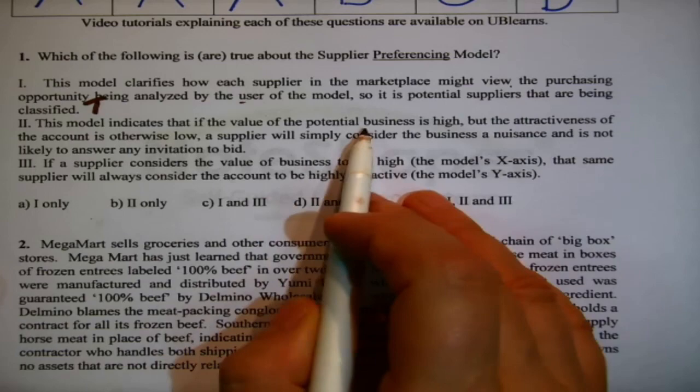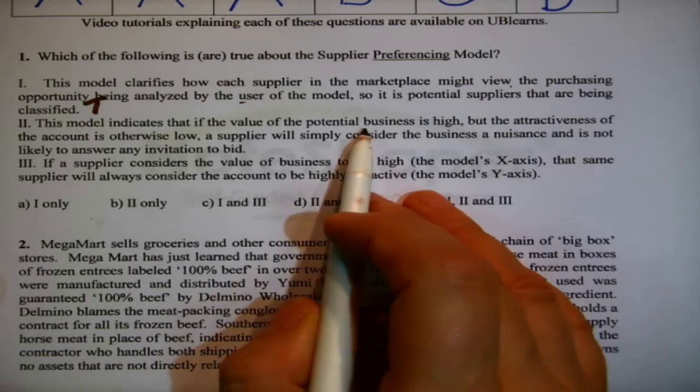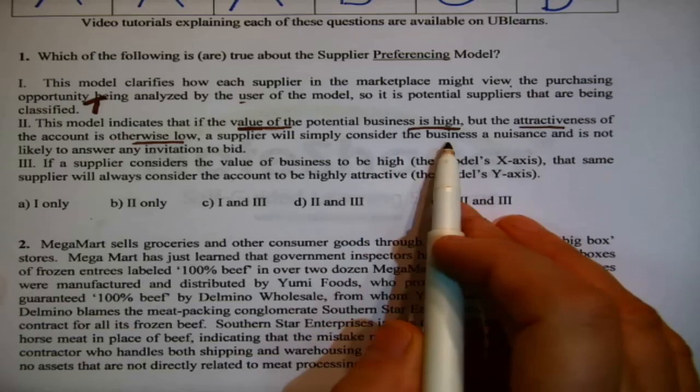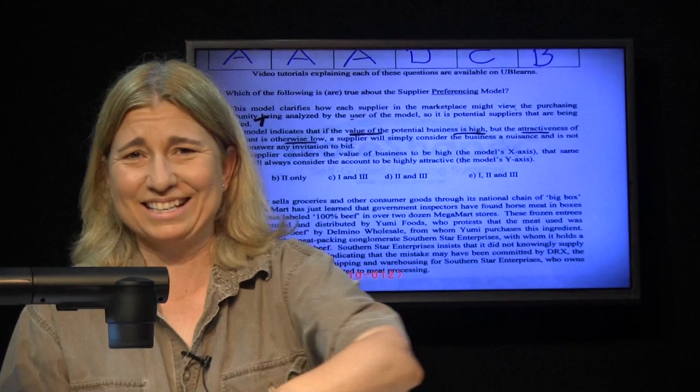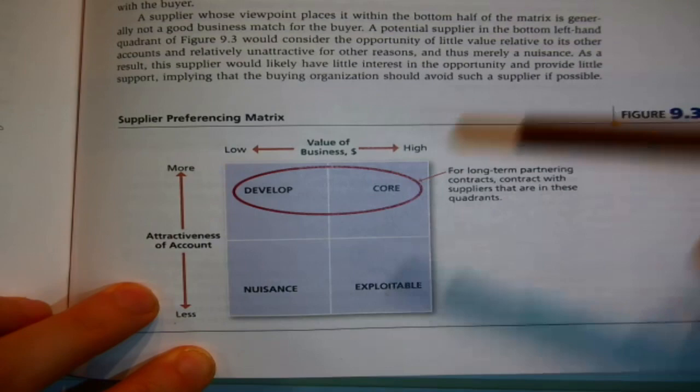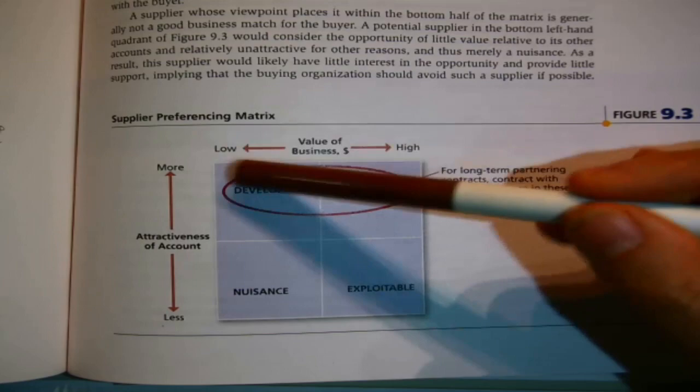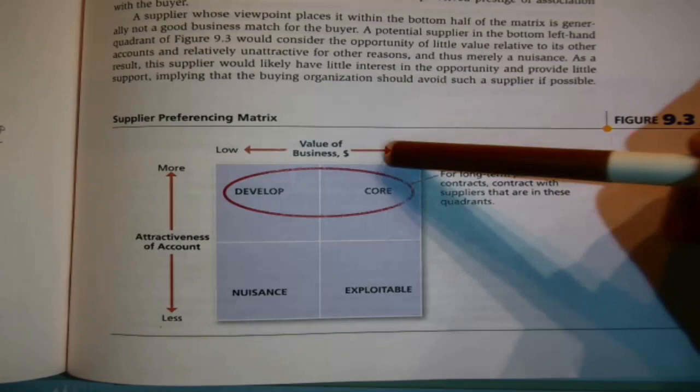This model clarifies how each supplier in the marketplace might view the purchasing opportunity being analyzed by the user of the model — that's us. So it's potential suppliers that are being classified. This model indicates that if the value of the potential business is high but the attractiveness of the account is otherwise low, the supplier will simply consider the business a nuisance and not likely to answer any invitation to bid. This is referring to the meaning of the two axes: the value of the business is the horizontal one — the amount of money you're thinking about spending.